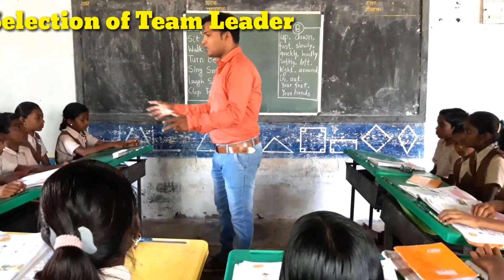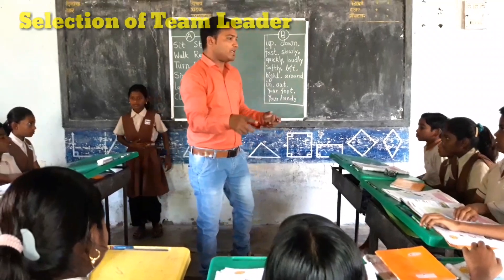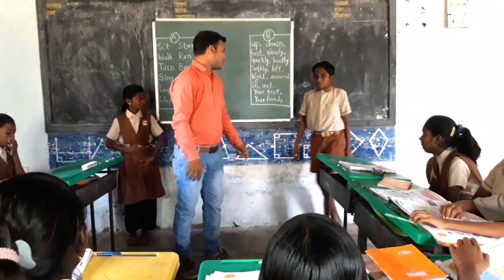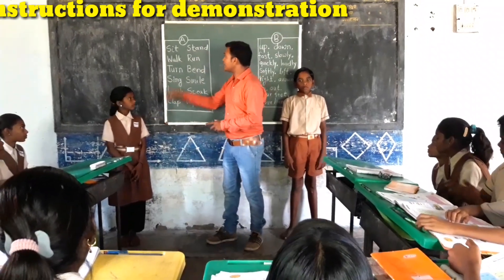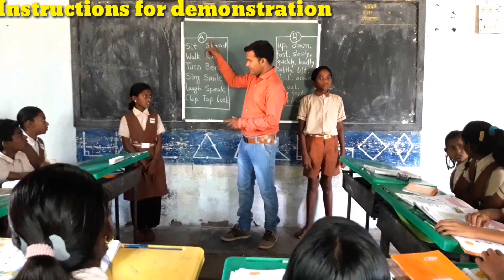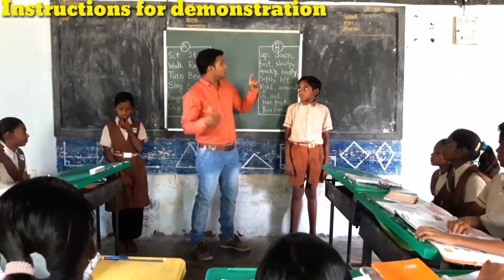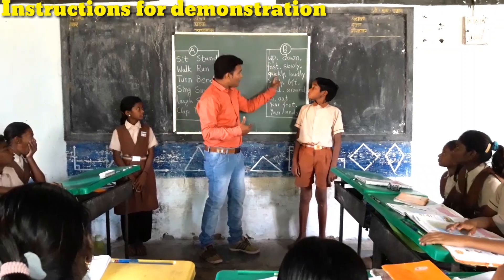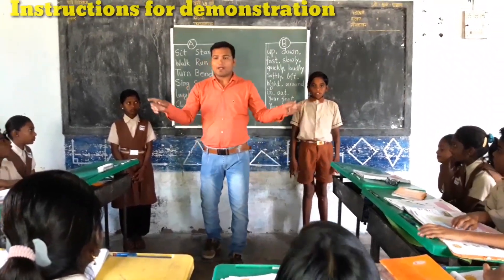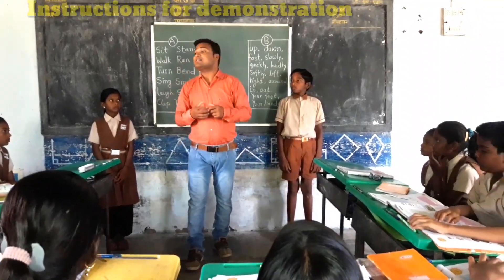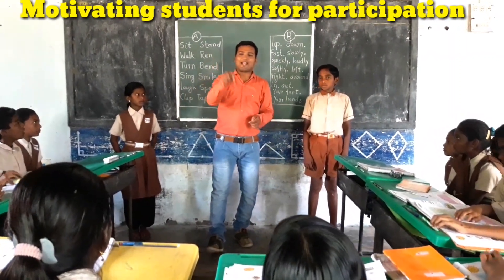Choose your team leader — who do you want? Jayshree! Okay, Jayshree, please come here. From Team B, choose your team leader? Rathik! Rathik, please be here. Jayshree, you have to take out some words from Set A. Rathik, after Jayshree takes out a word from Set A, you have to pick up an appropriate word from Set B to frame a command. And all of you students have to repeat the command loudly. Is that clear? Let's start this activity right now.